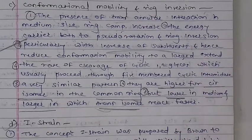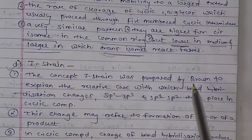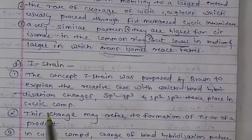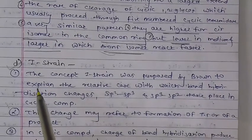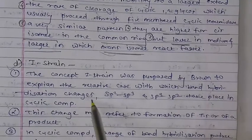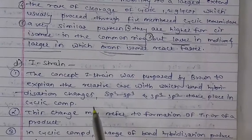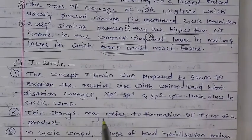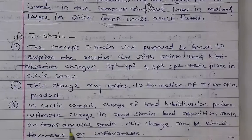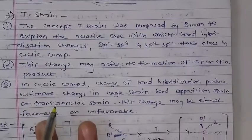Next point: I-strain. I-strain can be explained in the case with the most often hybridization change. This may be referred to the formation of the transition state of the product. Third point: cyclic change in the bond hybridization produces an ultimate change in the position strain in the bond.